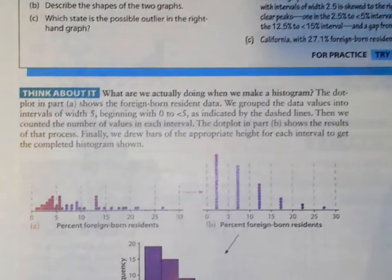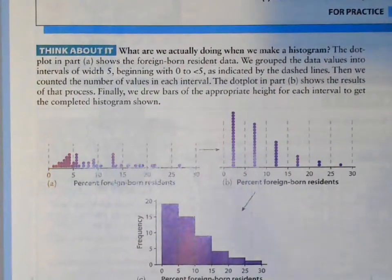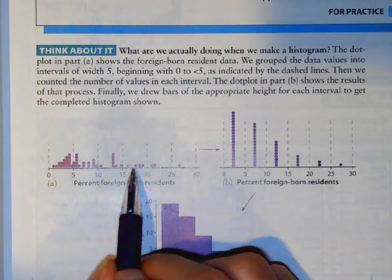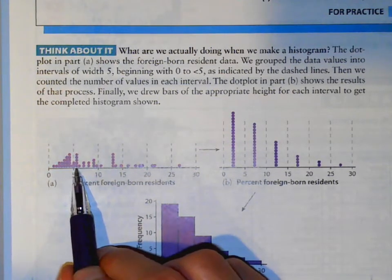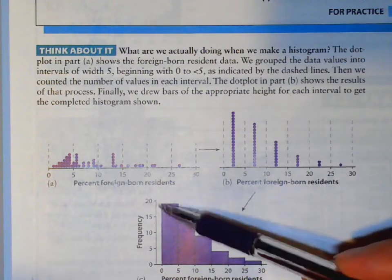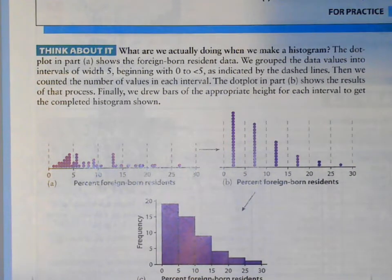Here they're asking us to think about how do you actually make these. Basically, if you think about your dots here, think about all the dots in this interval, just count how many are in that interval, make a bar out of it. That's basically what we're doing there to make our histogram.